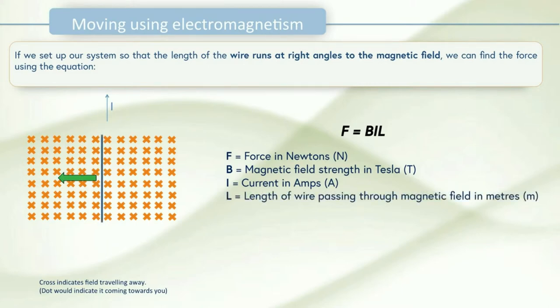Then we've got L. L is the length of wire which passes through the magnetic field in meters. It's worth remembering it's not the total length of the wire but just the length of the wire that crosses over that magnetic field.